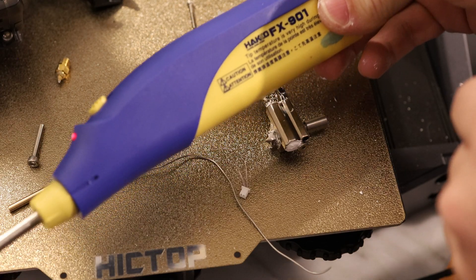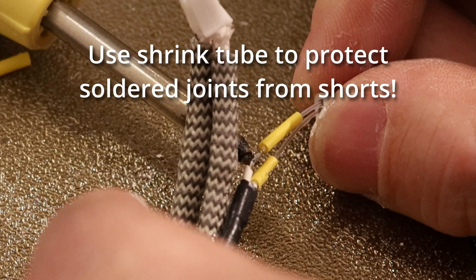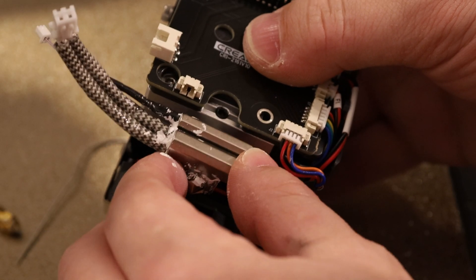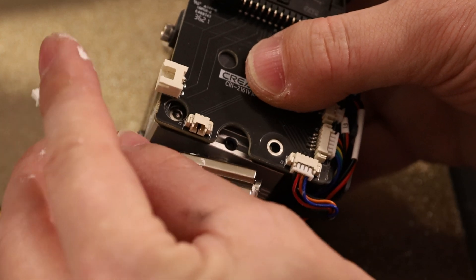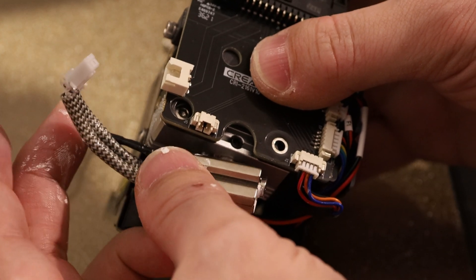I'm going to be using this HAKO portable soldering iron, super convenient for small jobs like this. This fits right back in here, and then I'll just tighten that grub screw and plug these connectors in, and we'll have our new hotend.